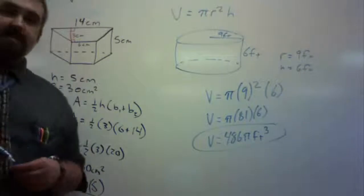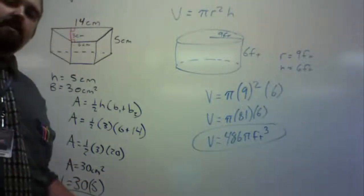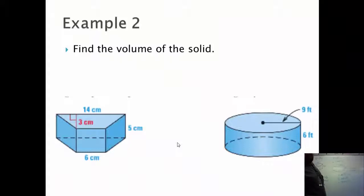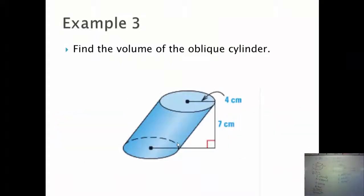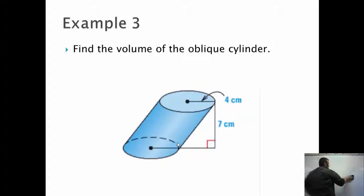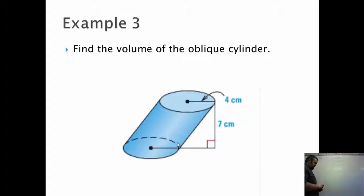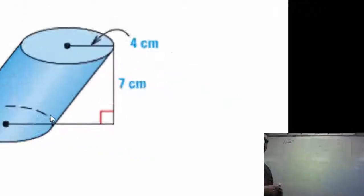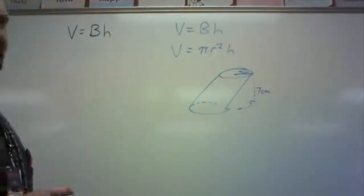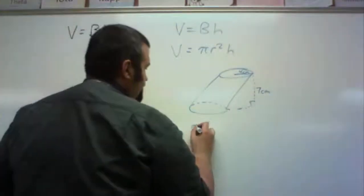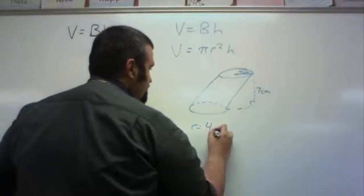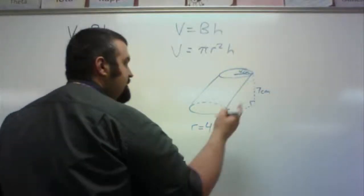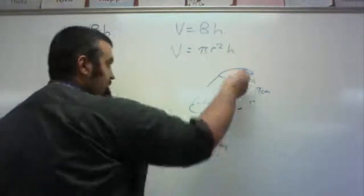Alright, and that's how you find the volume of a solid — take the base area, multiply by the height. Now, I might ask you in a different form. Find the volume of the oblique cylinder. I have the volume of a cylinder equation. Does it matter if it's oblique? No, it really doesn't. As long as I know the radius and the height, I can find it. The radius here is 4 centimeters, and the height is 7 centimeters, because that's the distance between the bases.